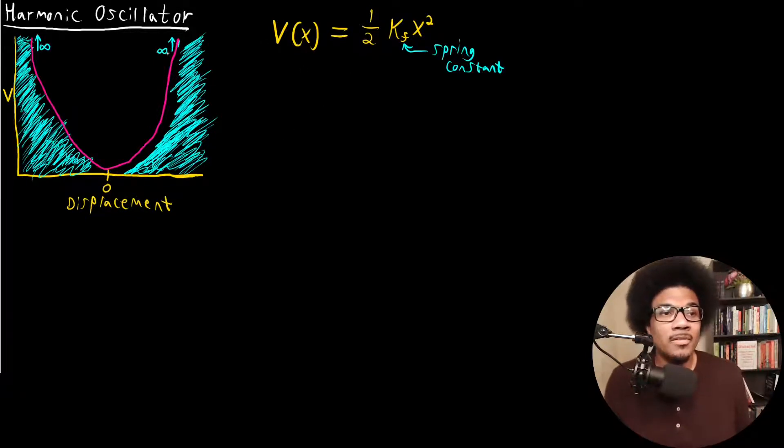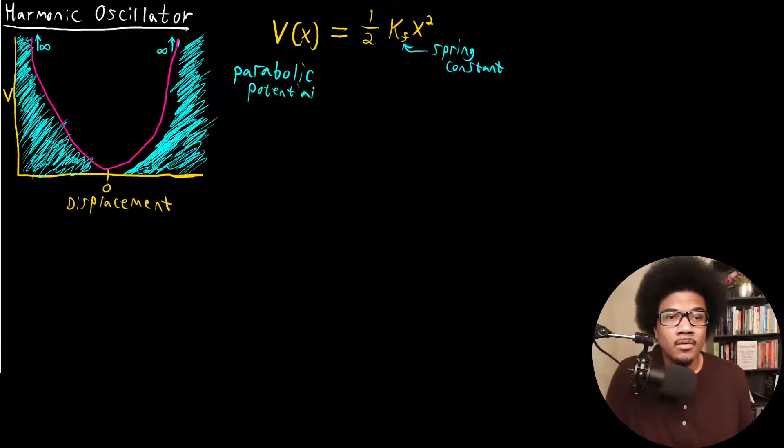And so this is what it would look like graphically. Basically what you see here is a parabola that has infinite potential on both sides of it. So this is what we actually call a parabolic potential energy.